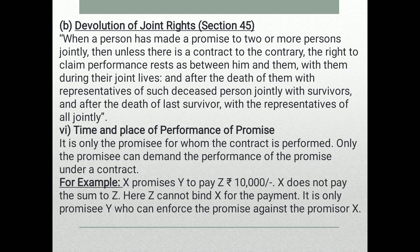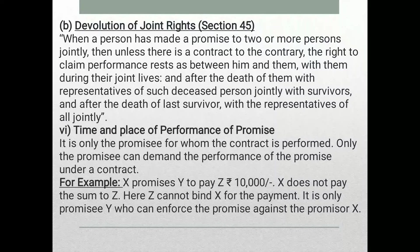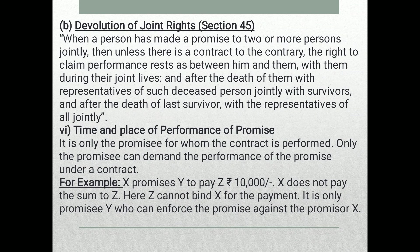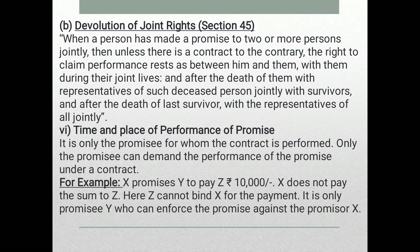Devolution of joint promise — Section 45: when a promise is made to two or more persons jointly, unless there is a contract to the contrary, the right to claim performance rests with all of them jointly during their lifetimes, and after the death of any one, with the representatives of such deceased person jointly with the survivors.